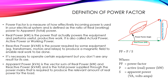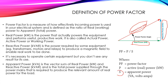The apparent power, represented in kilovolt-amperes, is the vector sum of the real power in kilowatts and reactive power in kilovars. It is the total power supplied through the grid required to produce the relevant amount of real power. In the diagram, S is the apparent power, P is the active power, and Q is the reactive power.